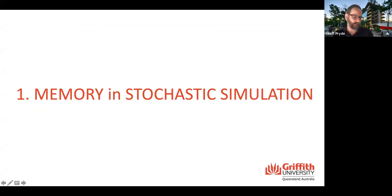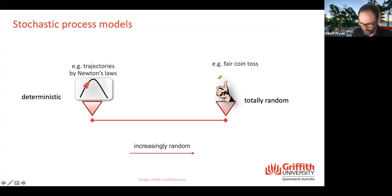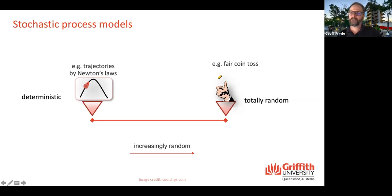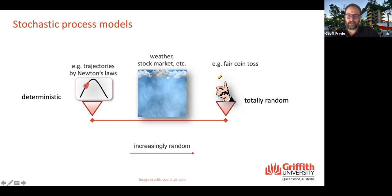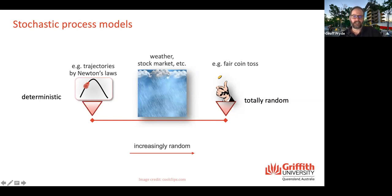First, let's talk about memory in stochastic simulation. We're used to physical systems that appear deterministic — things like trajectories described by Newton's laws. On the other hand, we're used to systems that are completely random, like a fair coin toss, or even a fair quantum coin toss. But there are systems that sit at various points along this spectrum. There are systems like the weather and the stock market where we can see some determinism, but there seems to be a random element as well — whether that's truly random or just some level of complication that we can't deterministically model. It looks like randomness to us.